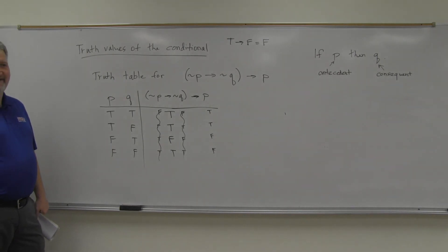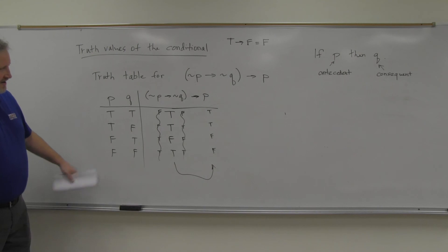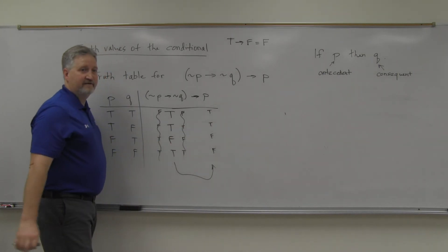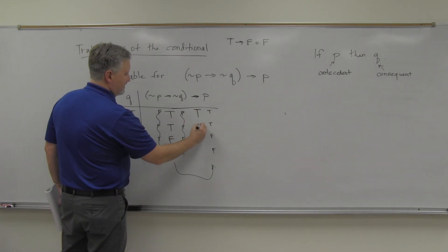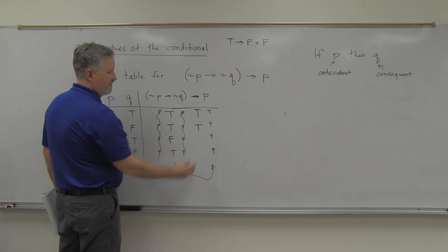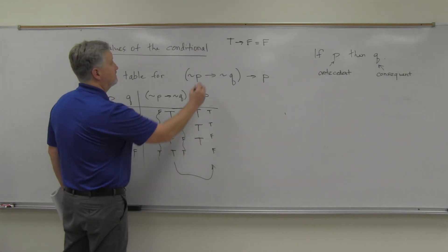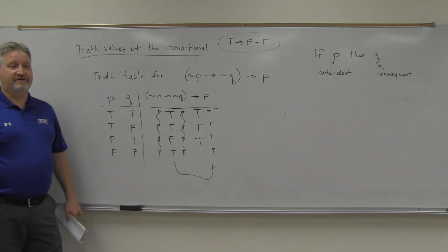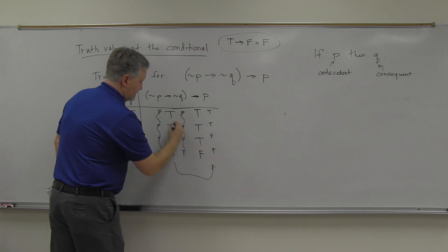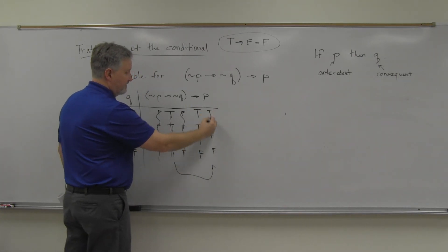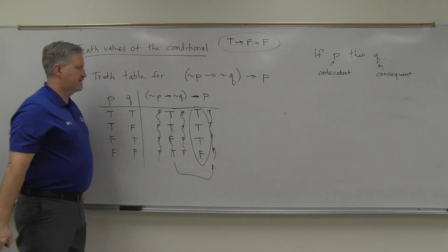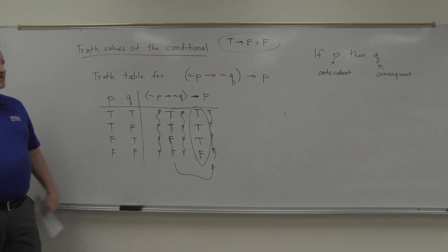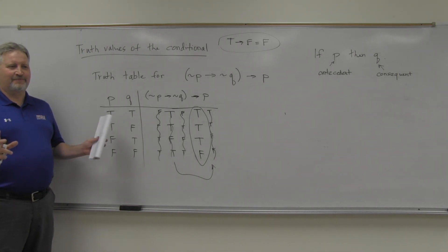Let's practice again. The first row: T arrow T — true. Second row: T arrow T — true. Third: false arrow false — true. The only time it's false is T arrow F, which we have in the last row, so that one is false. It was almost a tautology to the last line. Give those a little practice — I'll have some ready for you for the homework.